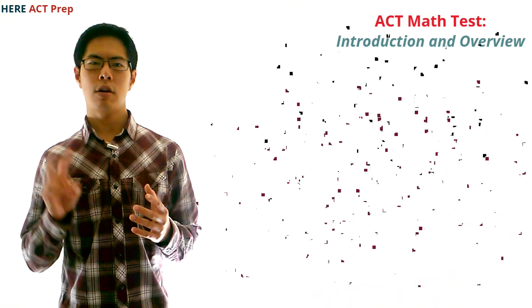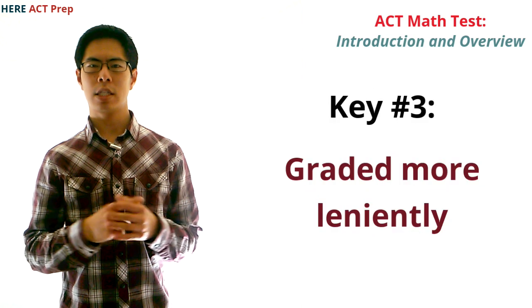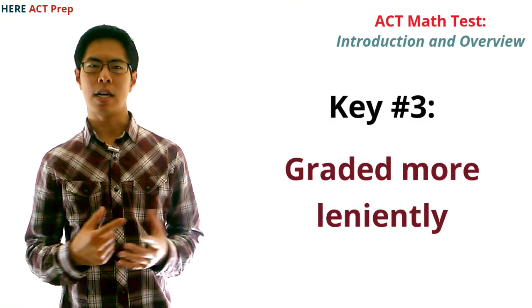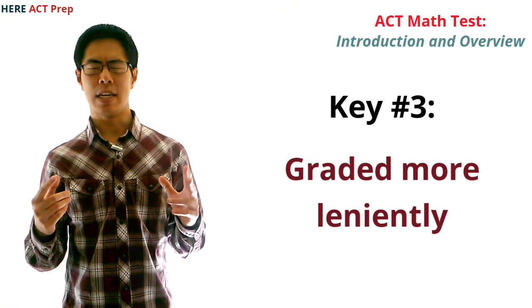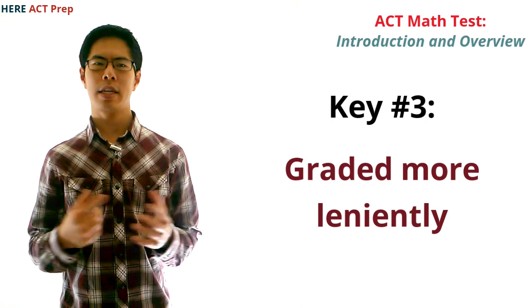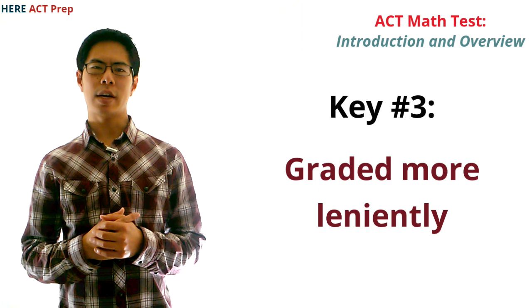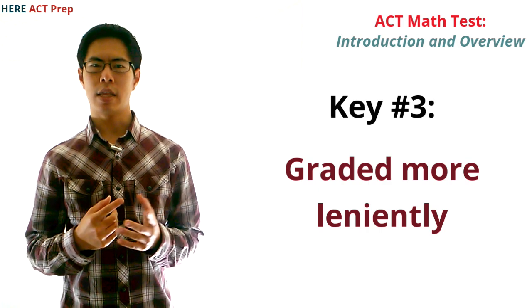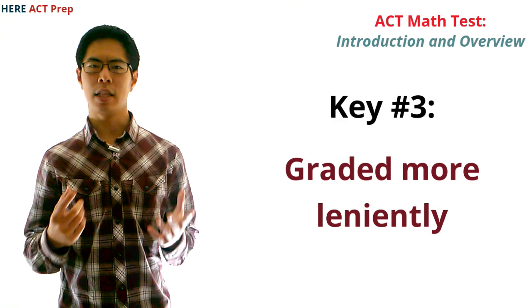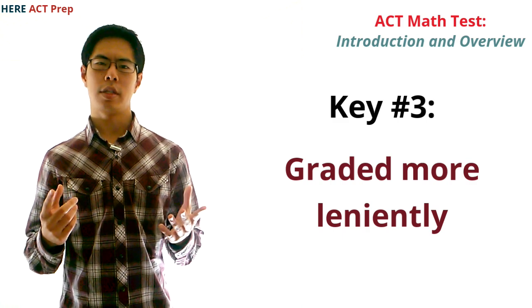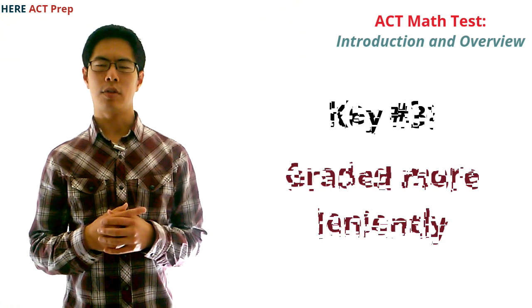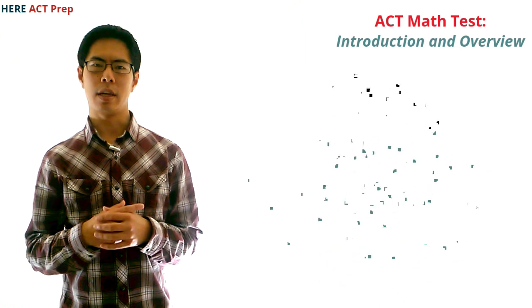The third thing you should know about the ACT math test is that you can miss more questions on this test and still get the same score as on some of the other tests, so the grading is relatively lenient. Generally speaking, if you got two-thirds of the questions right on the math test, you would end up with a score about three points higher than if you got two-thirds of the questions right on the English test. So although you should still do your best, just know that the grading isn't as strict as for the English test.